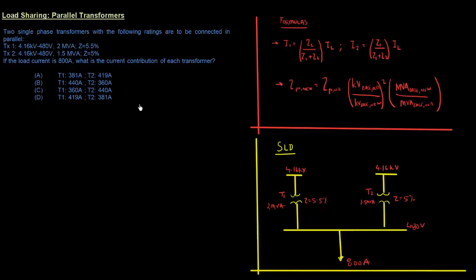We've been given four answer choices. I've written two formulas we'll be using and drawn the single-line diagram, which gives us a picture of what the system looks like and helps us solve the problem more easily. Let's look at the formulas quickly — I'll go into them as we use them in the solution.